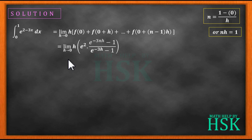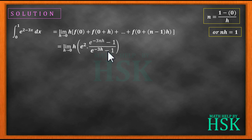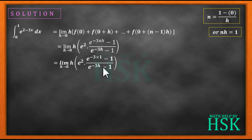To solve this limit, I notice there are two variables: h whose limit is tending to 0, and n whose limit is tending to infinity. Because of two variables, I cannot apply the limit right away. So first I replace nh with 1, and with this substitution I get only one variable. On placing nh equal to 1, I get a simplified expression and can now apply the limit h tending to 0.